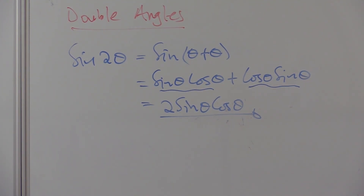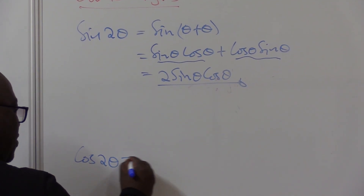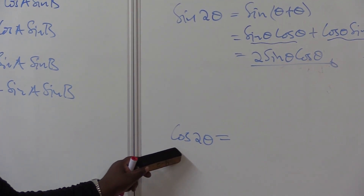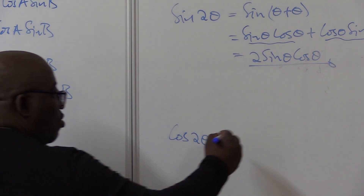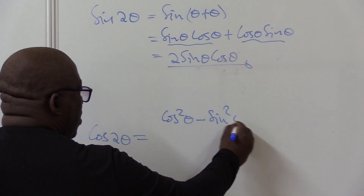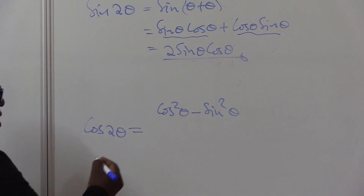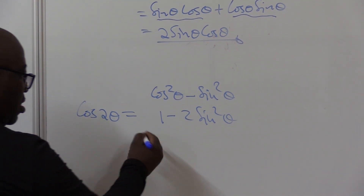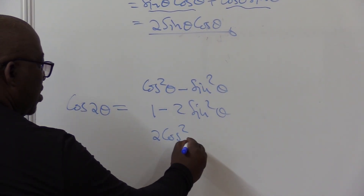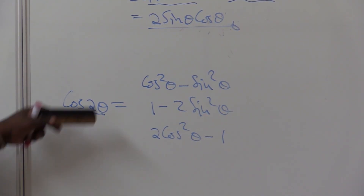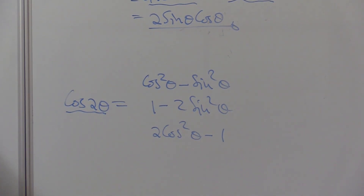I want us to go to another double angle — for cos. How do we expand cos 2-theta? For cosine we've got three forms. The first one would be cos squared theta minus sine squared theta. The second one can be 1 minus 2 sine squared theta. The third one would be 2 cos squared theta minus 1. So whenever you see the double angle for cos, you could use either this one, that one, or that one, depending on the scenario you're facing.